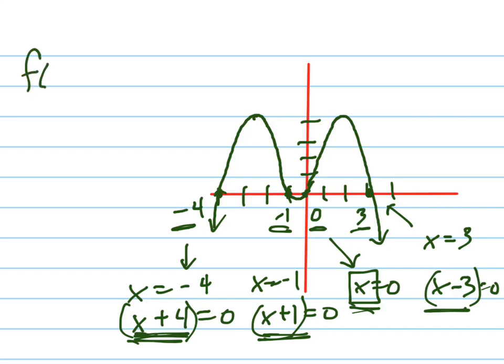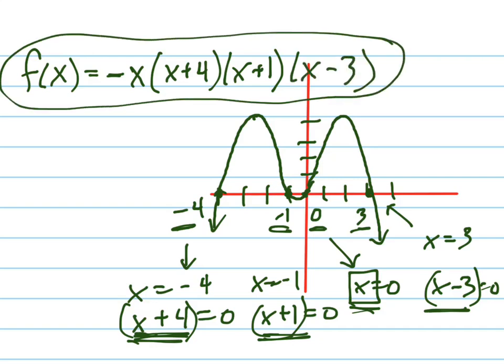So what is f of x equal? What's one equation you could write? First of all, notice that it's upside down, so we need to have a negative leading coefficient. That's tricky too. Then you've got a factor of x, a factor of x plus 4, a factor of x plus 1, and a factor of x minus 3. That is an equation for that graph.